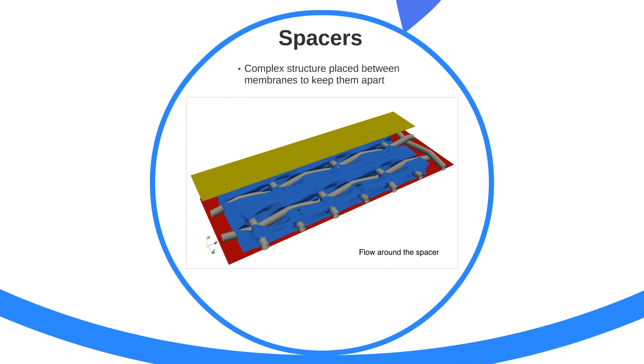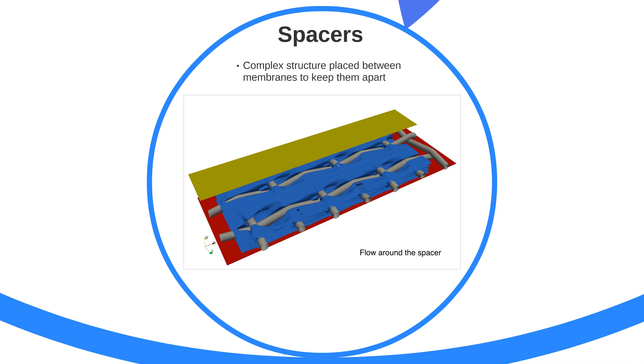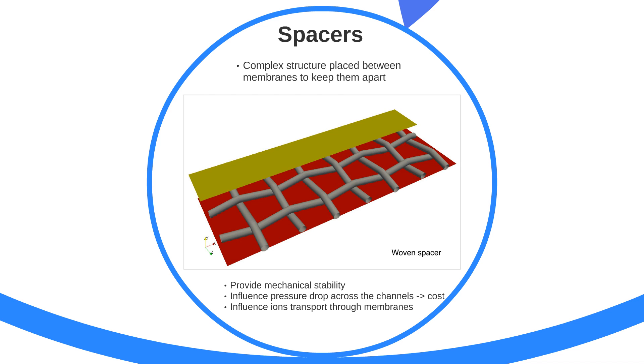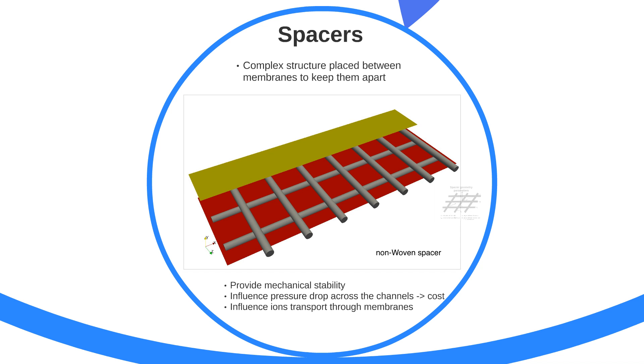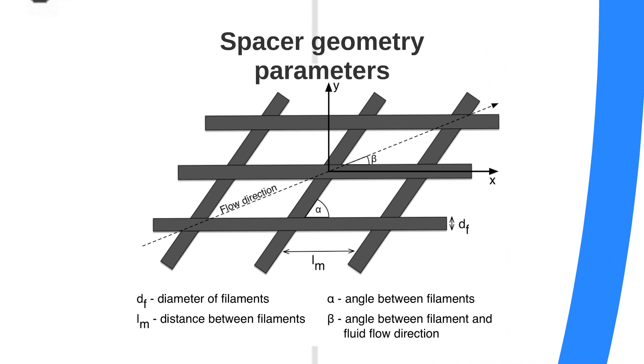Between the membranes, the spacers are used to keep them apart to create flow channel. The spacers provide mechanical stability, influence pressure drop across the channel and also influence ion transport through membranes. There are two major spacer types, woven spacer and non-woven spacer. And design of the spacer plays a vital role in optimizing this process.